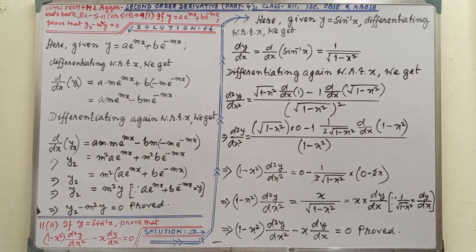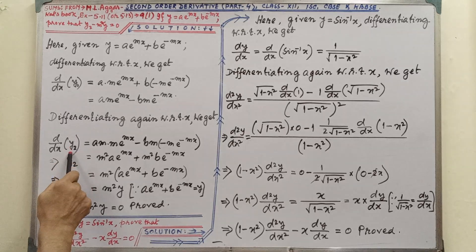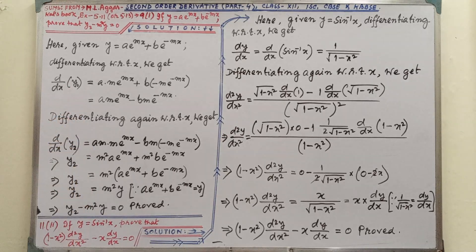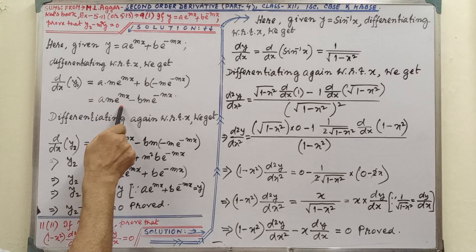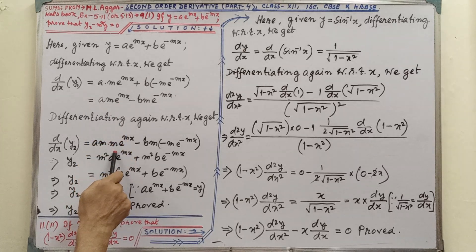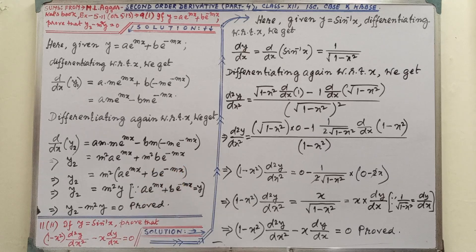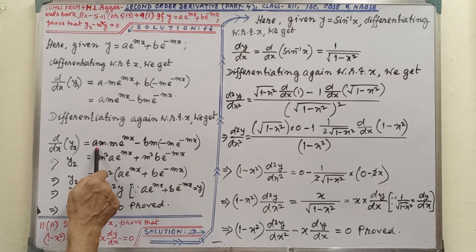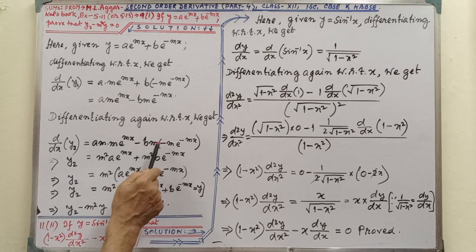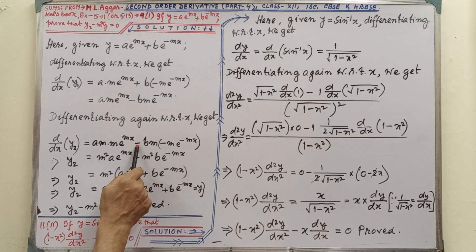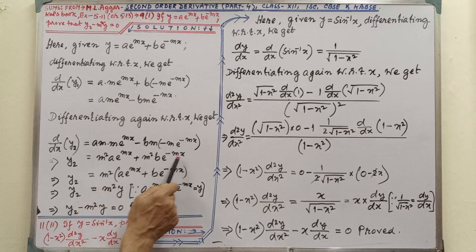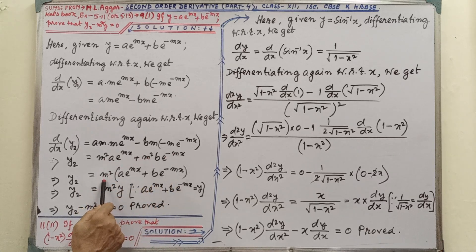Differentiating again with respect to x, here the symbol is y2. 'am' is constant and differentiation of e^(mx) is m·e^(mx). Similarly 'bm' is constant and differentiation of e^(−mx) is −m·e^(−mx). Now m × m gives m², and minus × minus gives plus. So we get y2 = am²·e^(mx) + bm²·e^(−mx). Taking m² as common, we have m² times [ae^(mx) + be^(−mx)].